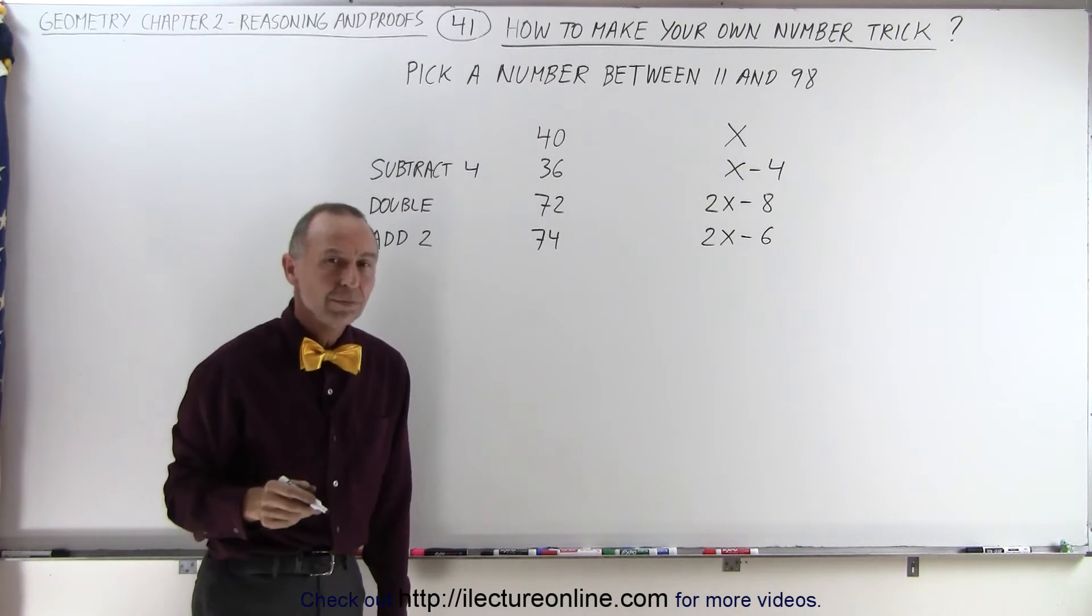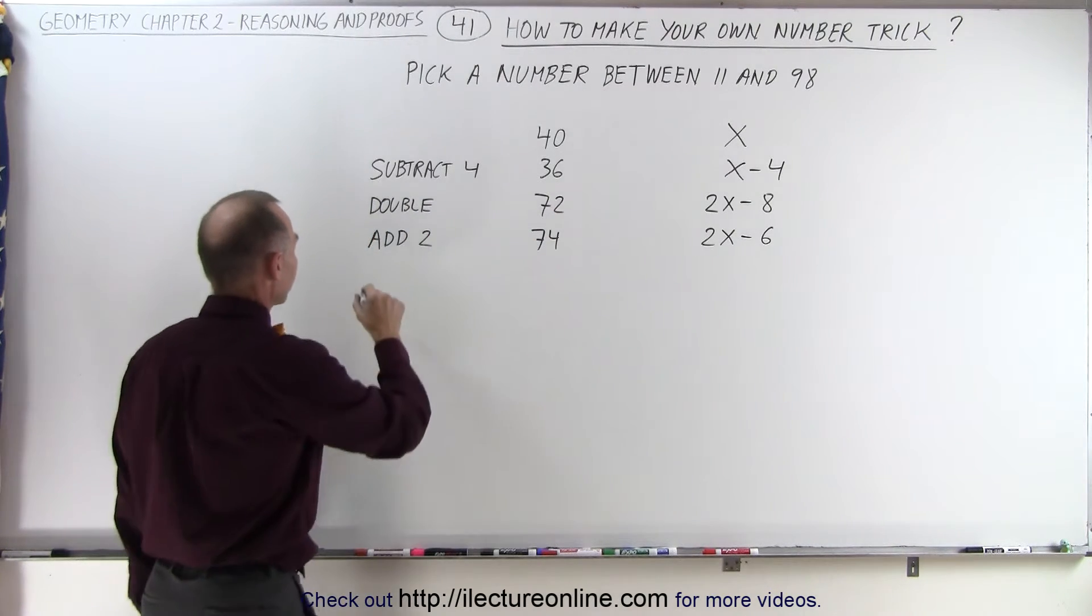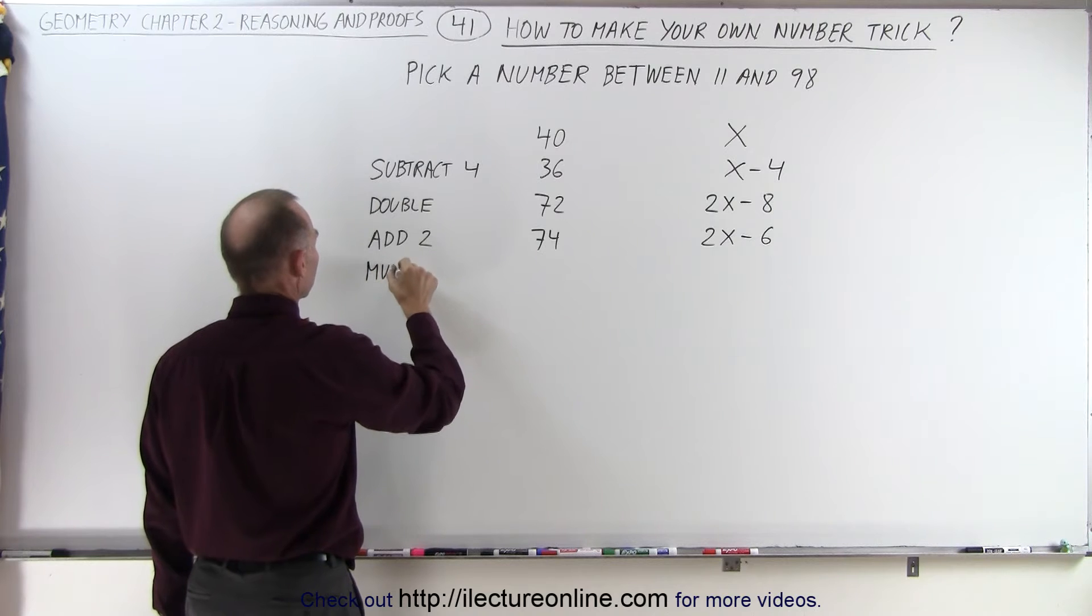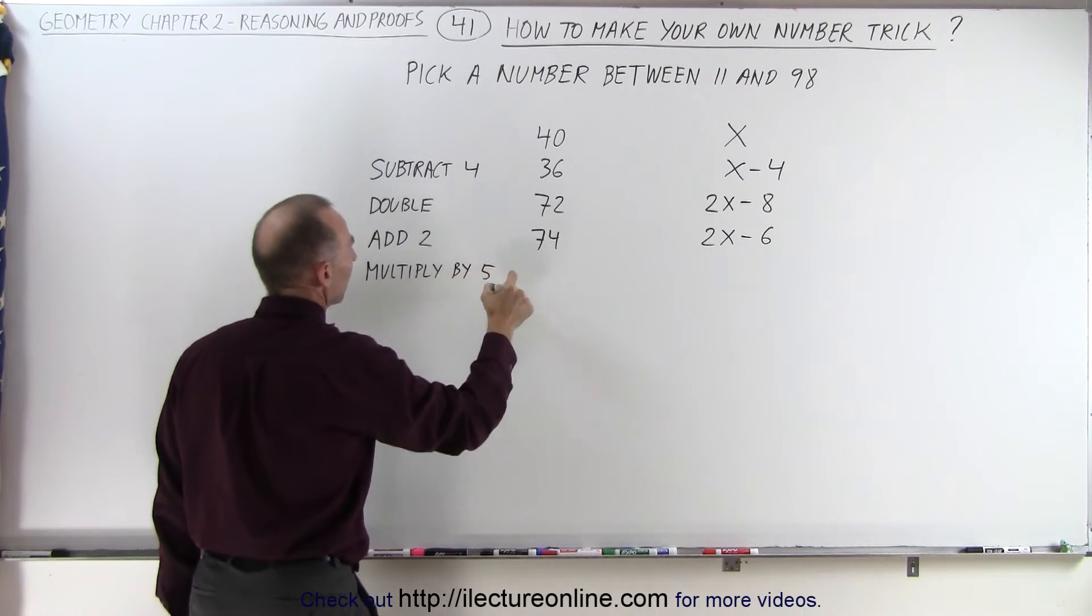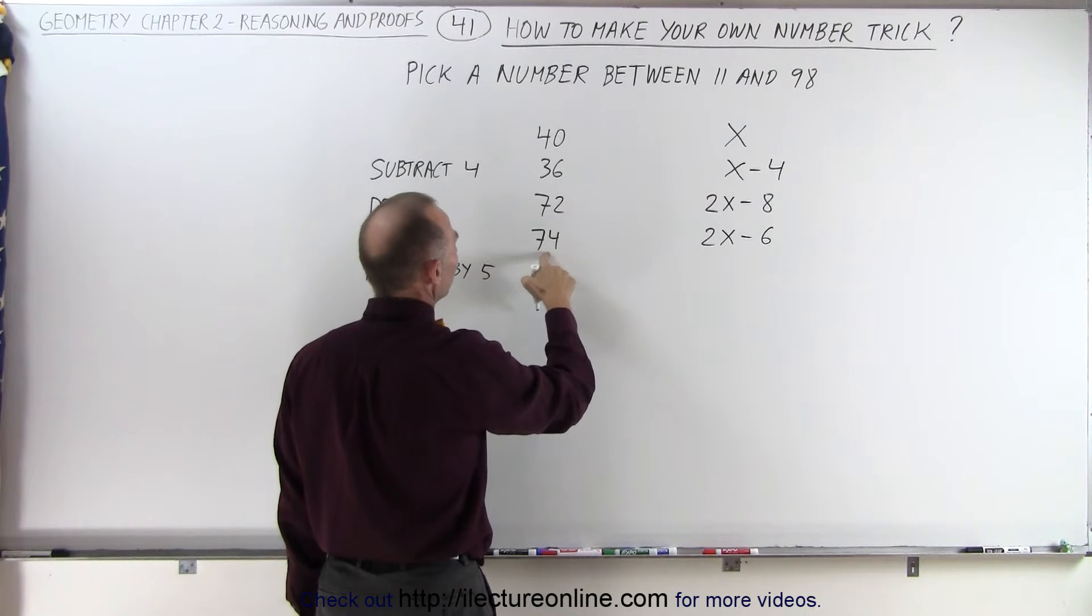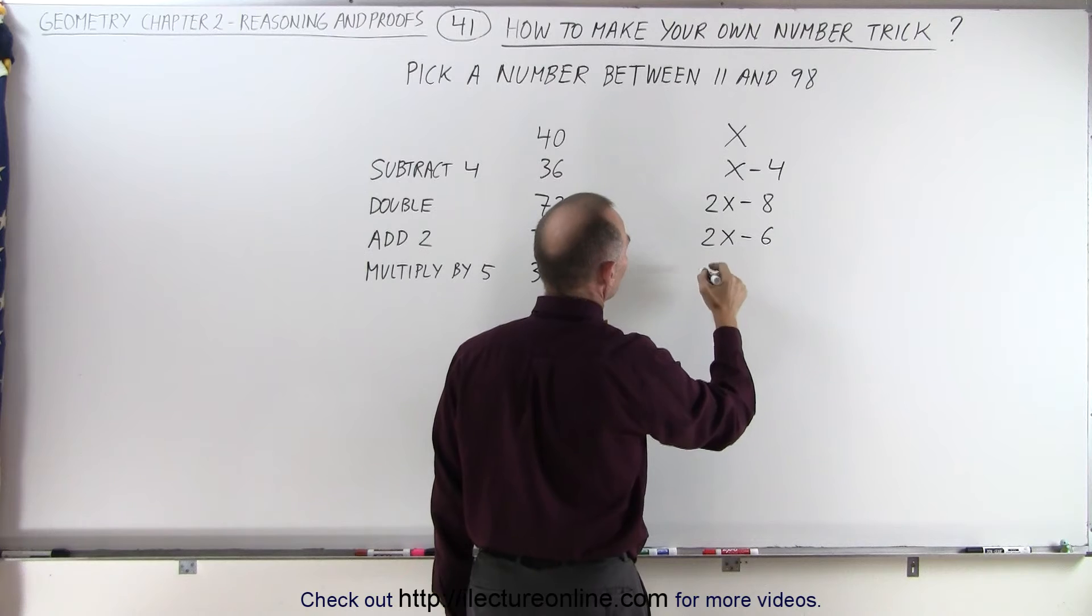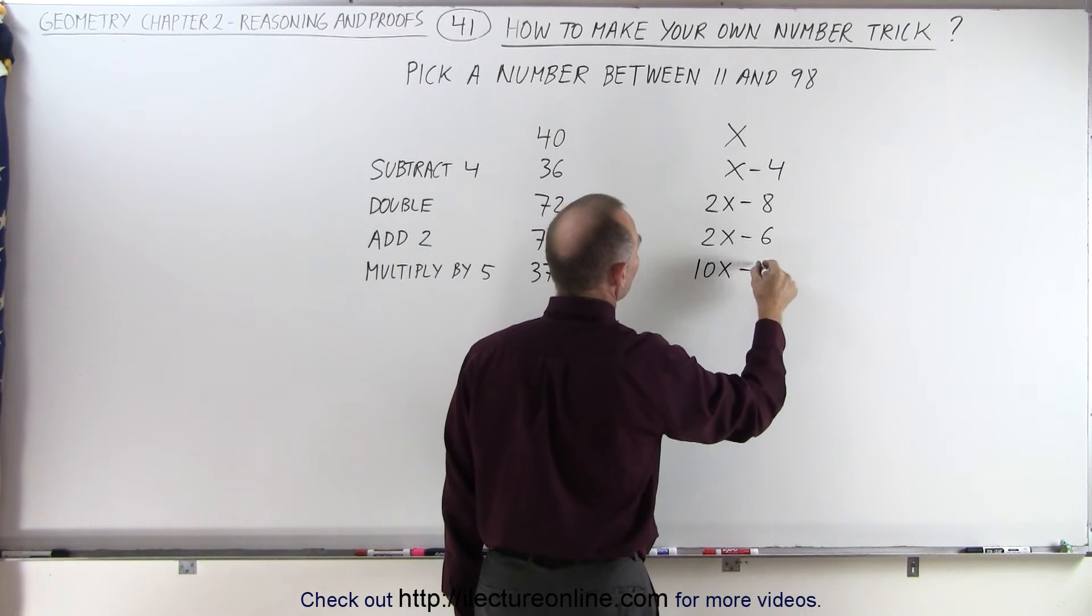Now let's tell them multiply the number by 5. So multiply by 5. So multiply this by 5, that's 370. Multiply this by 5, that gives us 10x minus 30.